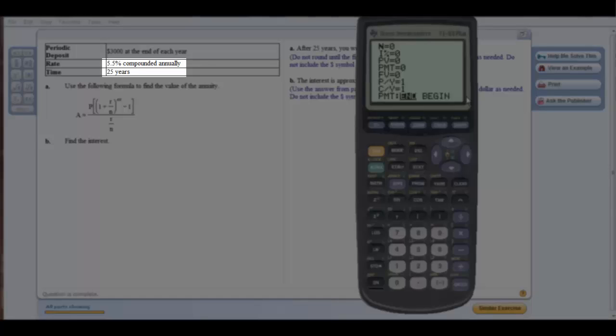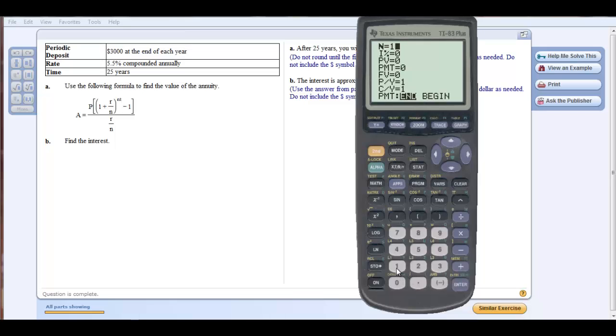Let's look at this problem. First of all, I'm compounding annually for 25 years, so I'm going to do one for annually, that is once per year, times 25 for the number of years that I'm compounding.